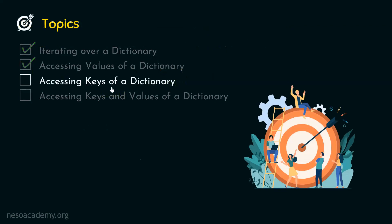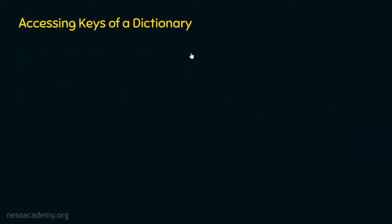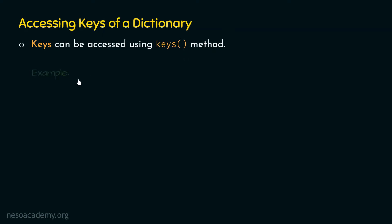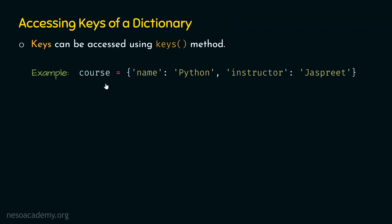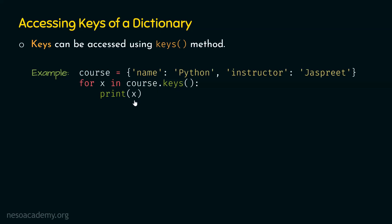Now let's move on to accessing keys of a dictionary. We have already learned how to access keys using a simple for loop. Now we will use the keys method. For the same course dictionary, we need this for statement: for x in course.keys(). Within this for loop, we need print x. If we execute this code, we will get the output: name, instructor.